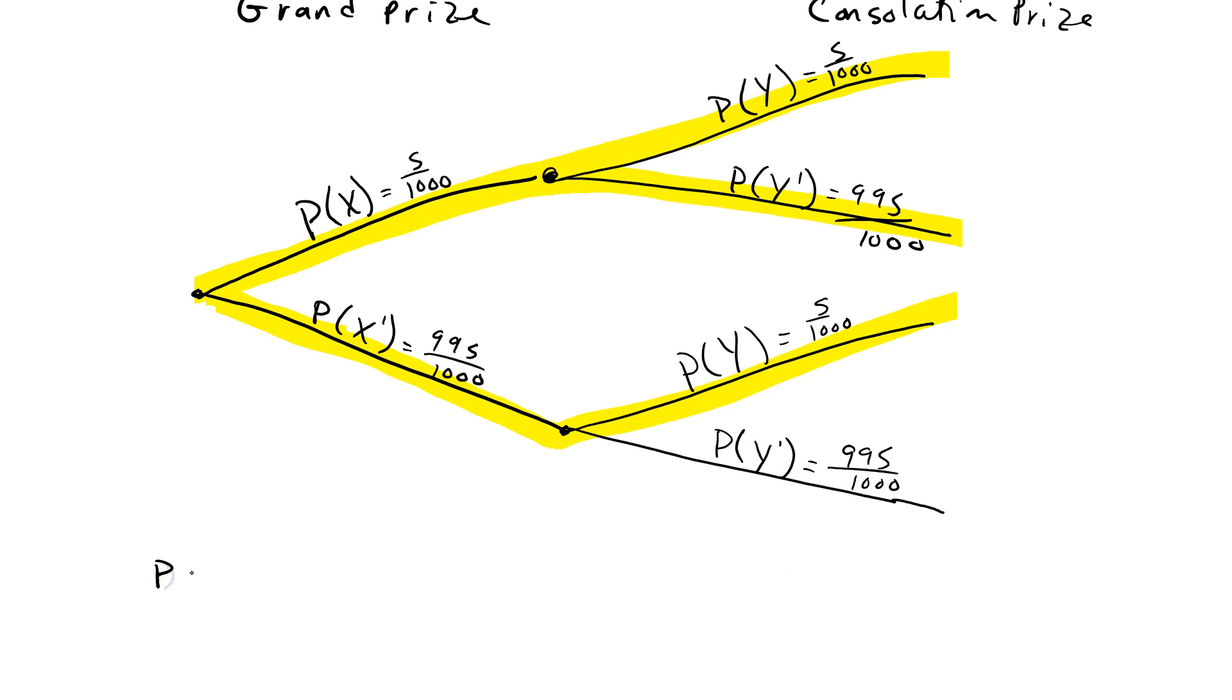So, probability of winning at least one is going to be... I'm just going to give different symbols for the different things. For the asterisk journey, that means that he wins both. That's going to be 5 out of 1,000 times 5 out of 1,000. And the heart journey is going to be he wins the grand prize, but he loses the consolation. So, winning the grand prize is going to be 5 out of 1,000 times losing the consolation prize, 995 out of 1,000. Plus the diamond going to the journey. Losing the grand prize, so 995 out of 1,000, multiplied by winning the consolation prize, 5 out of 1,000.